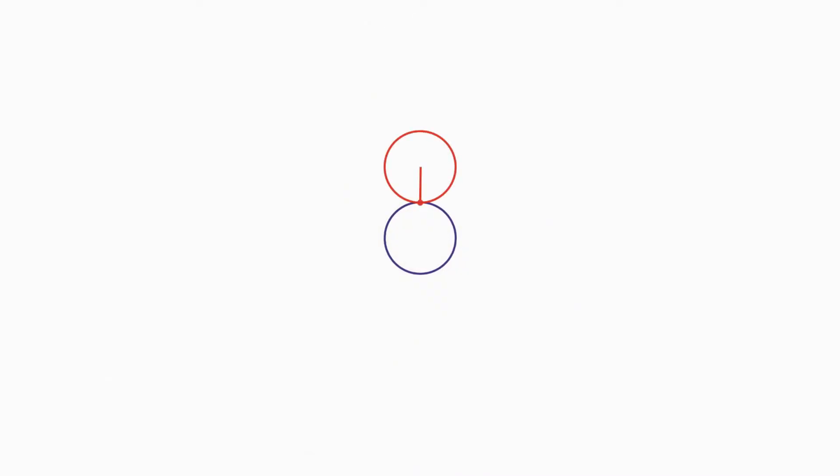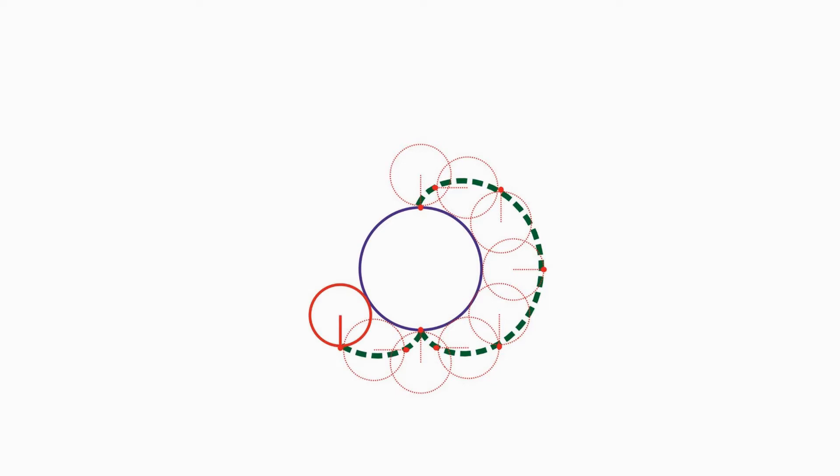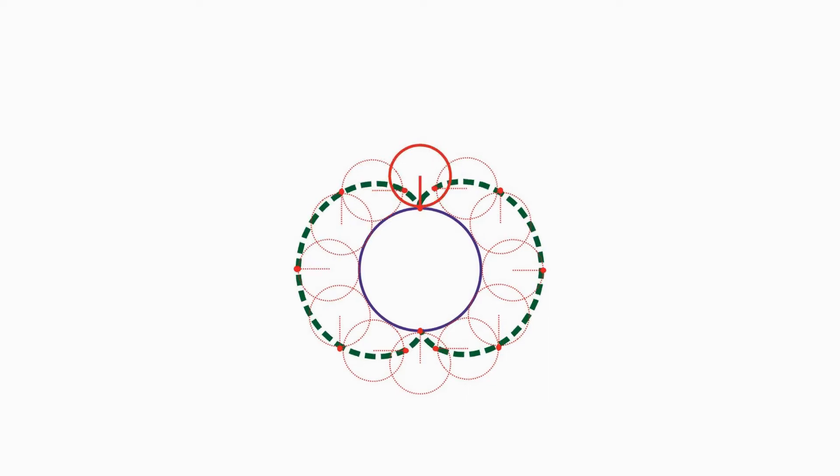Epicycloids are the shapes we get when we roll a circle around another circle. If both circles are the same size, a fixed point on the moving circle will trace this shape, called a cardioid. If the moving circle has a radius half the size of the fixed, we get a shape called a nephroid.